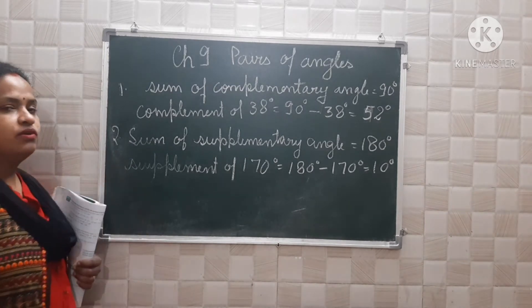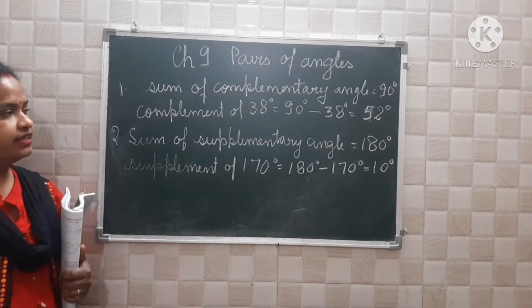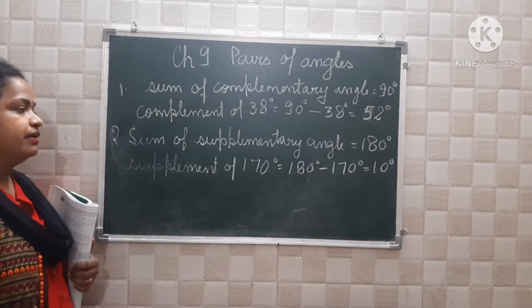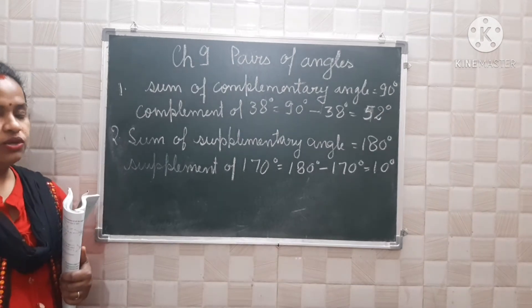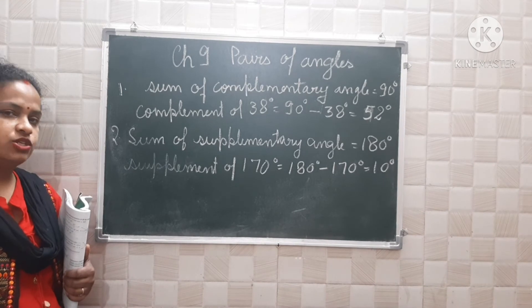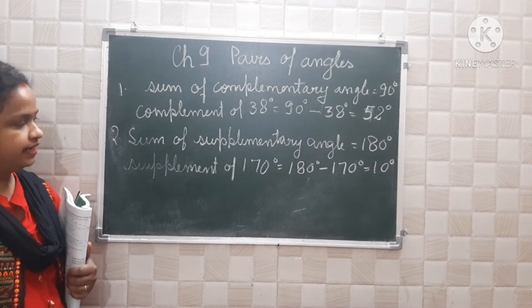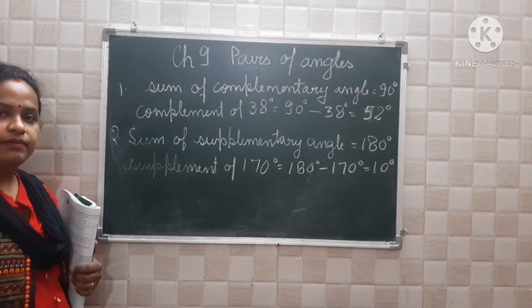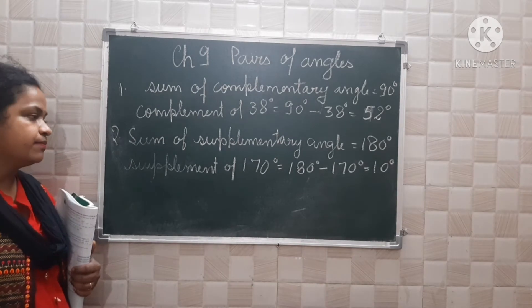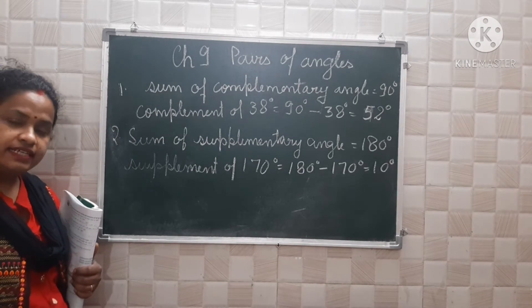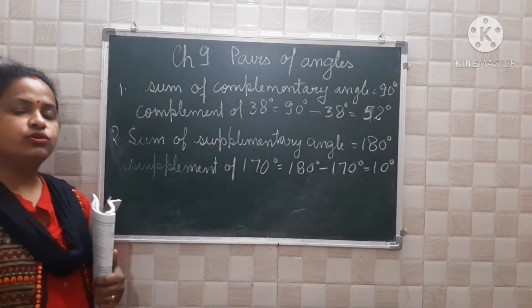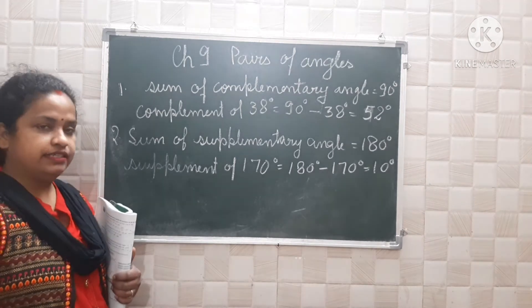Second, the sum of supplementary angles is equal to how much? 180 degrees. The supplement of 170 degrees will be how much? 180 minus 170 degrees, that is equal to 10 degrees. The sum of both should be equal to 180 degrees.